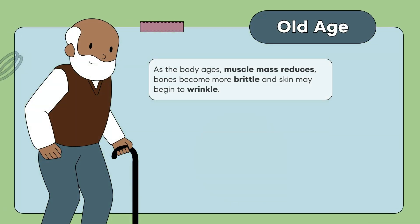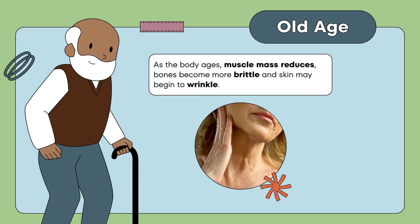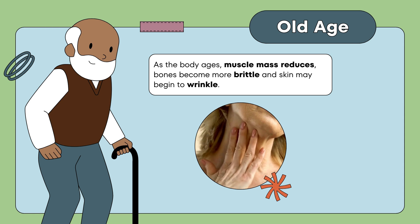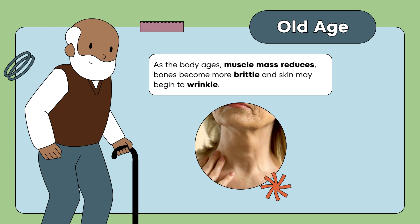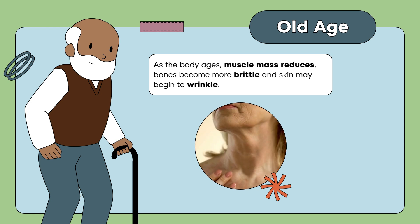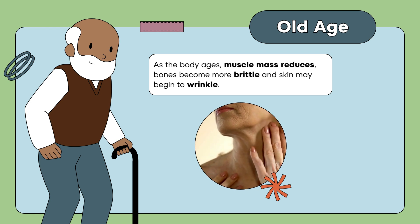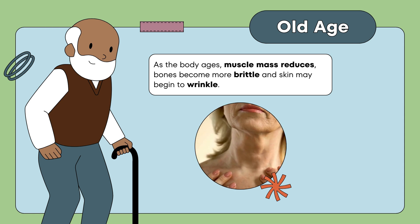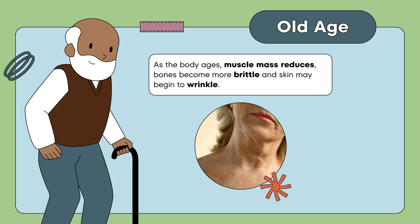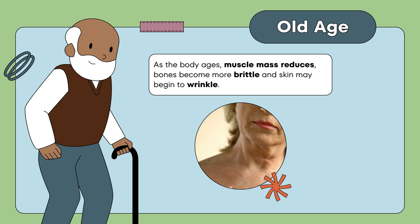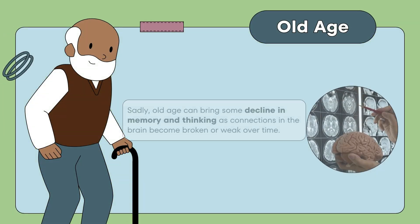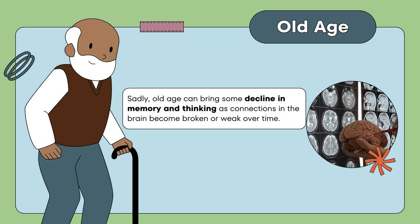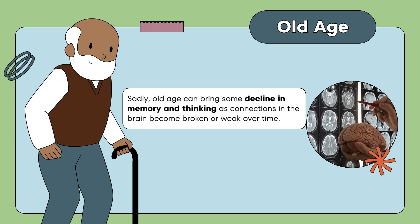As the body ages, muscle mass reduces, bones become more brittle, and skin may begin to wrinkle. Sadly, old age can bring some decline in memory and thinking, as connections in the brain become broken and weak over time.